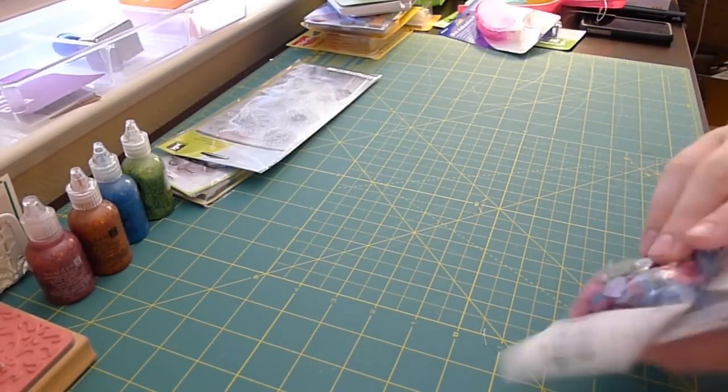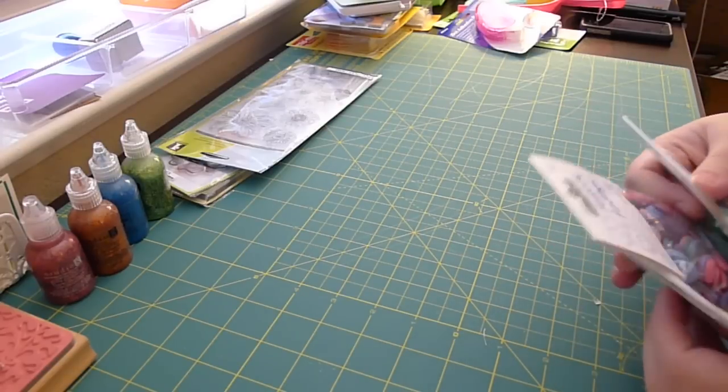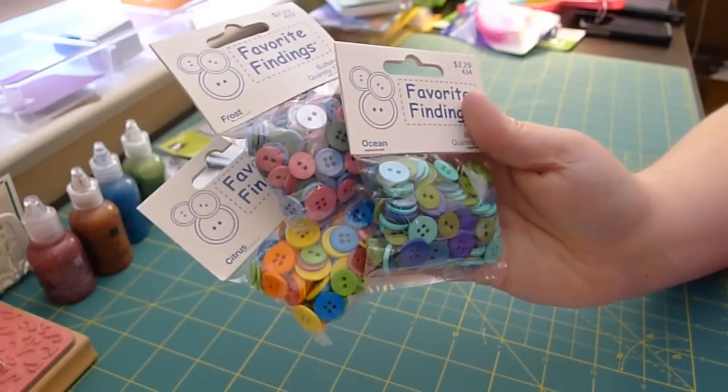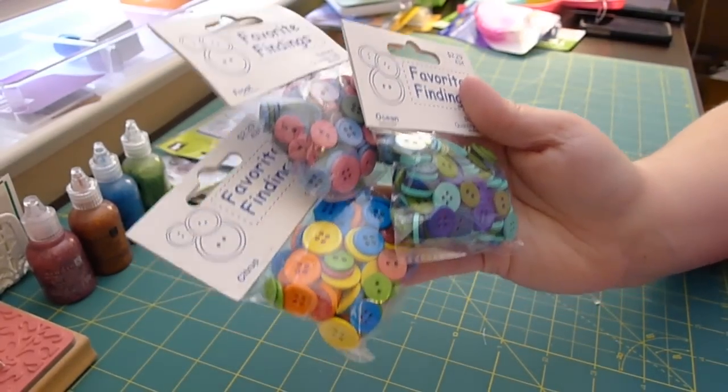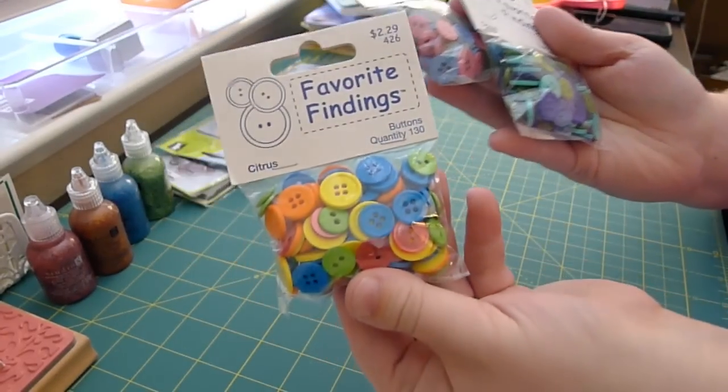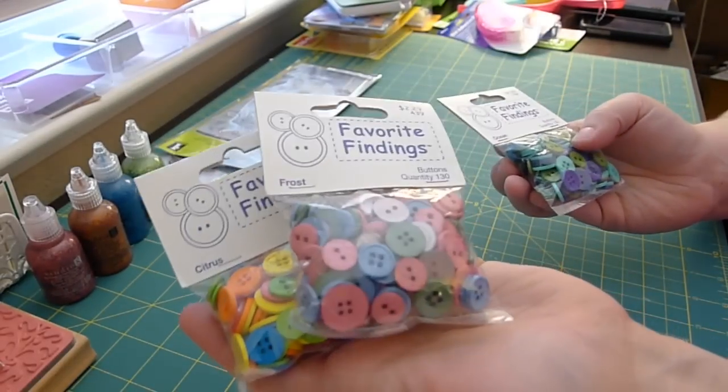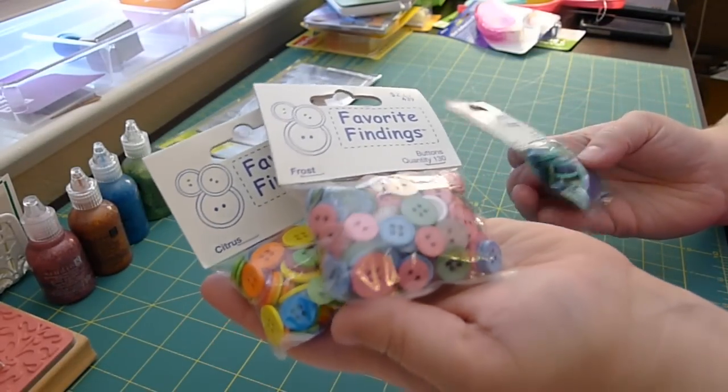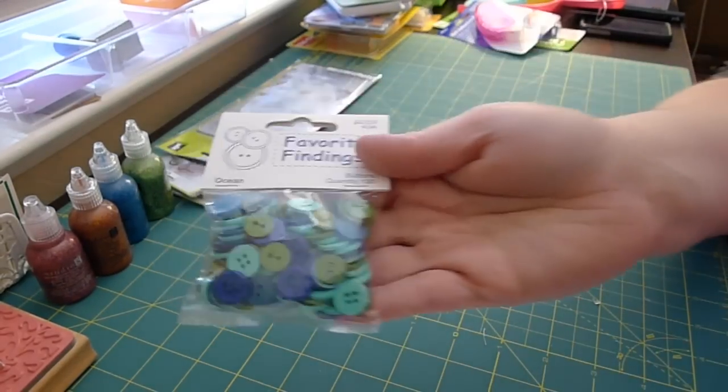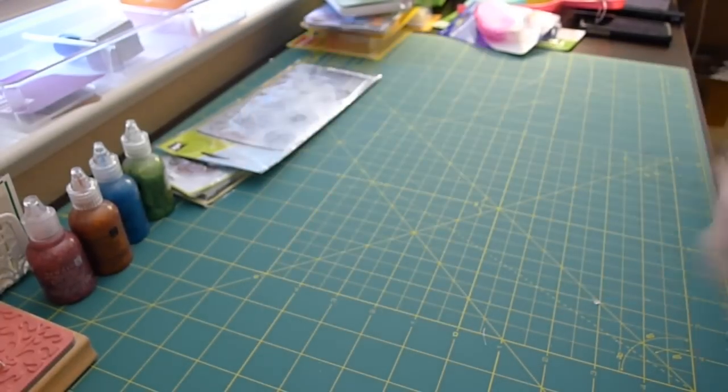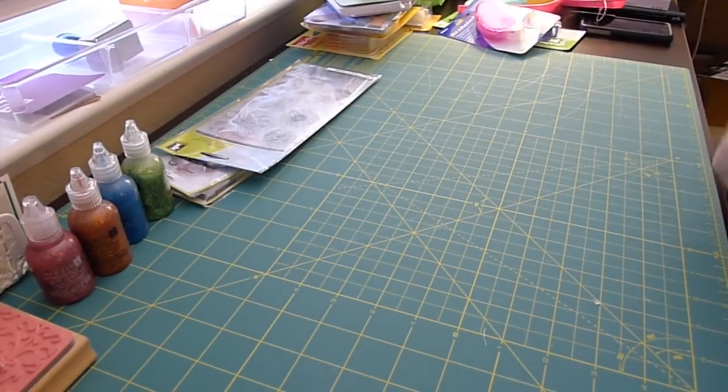I also, because I decided I didn't have a million and a half enough buttons, I decided to get three packs of buttons. These are citrus, which are a little brighter. These are frost, which I'm not really sure why they're frost, because there's not a lot of blue in there. And then ocean, and I'll go with that being oceany.